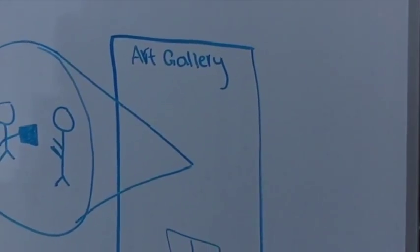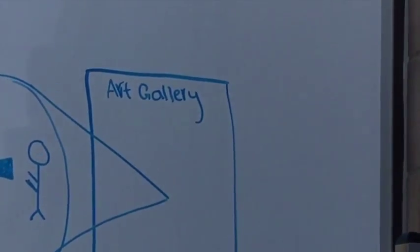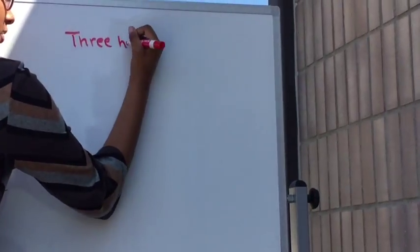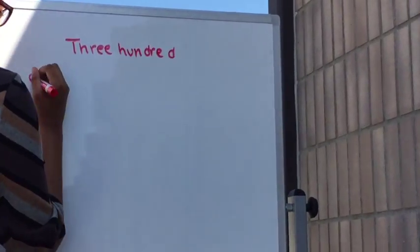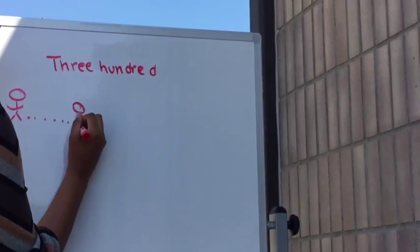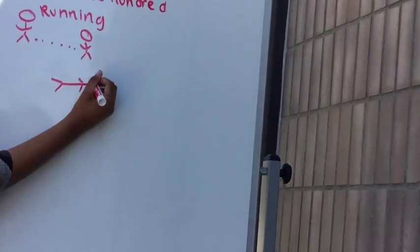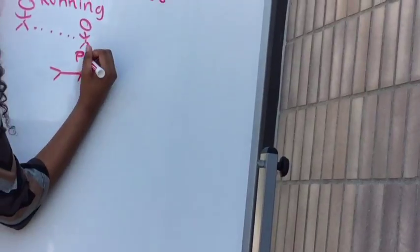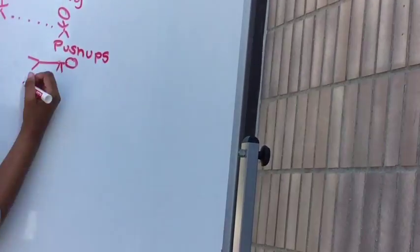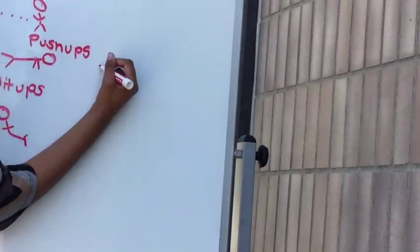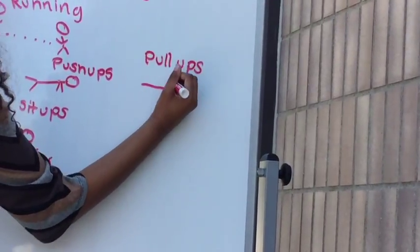Karl gladly accepts and Schmeling introduces the first stage of training called the 300. The 300 consists of many different exercises that add up to 300 total. These exercises include running, push-ups, sit-ups, and pull-ups.